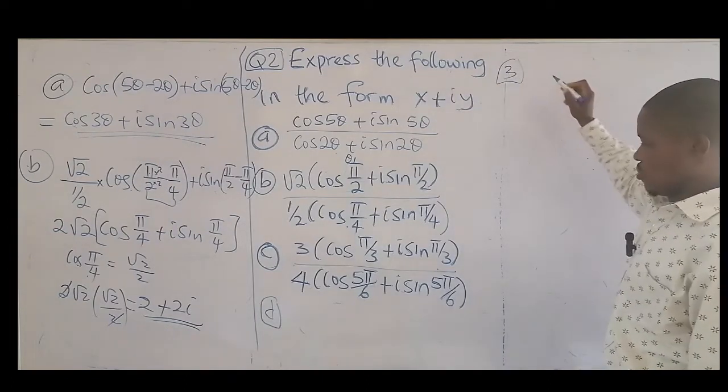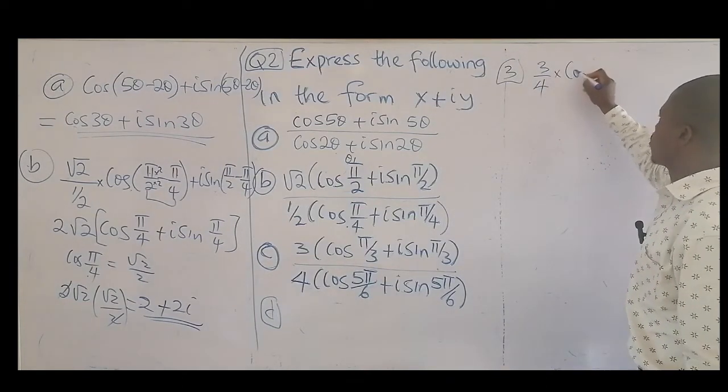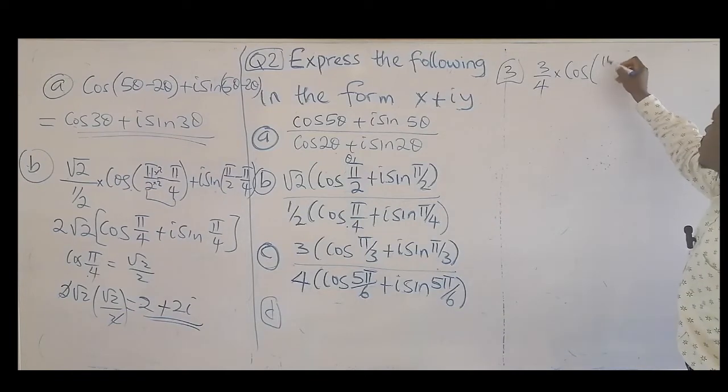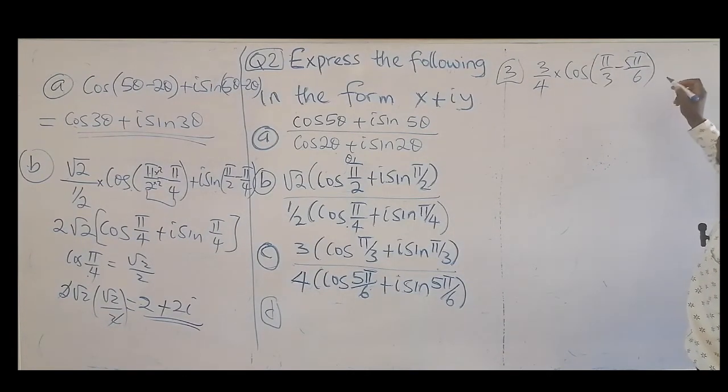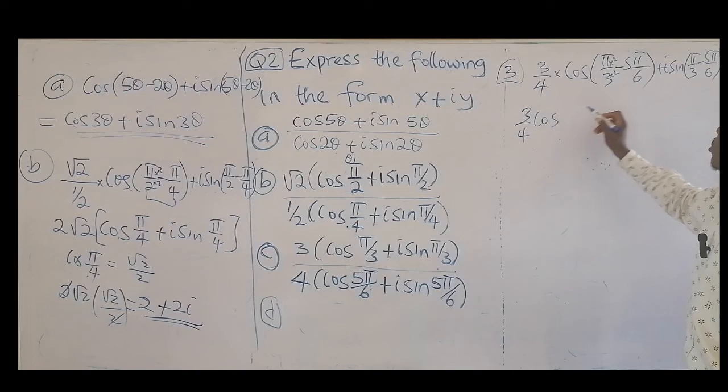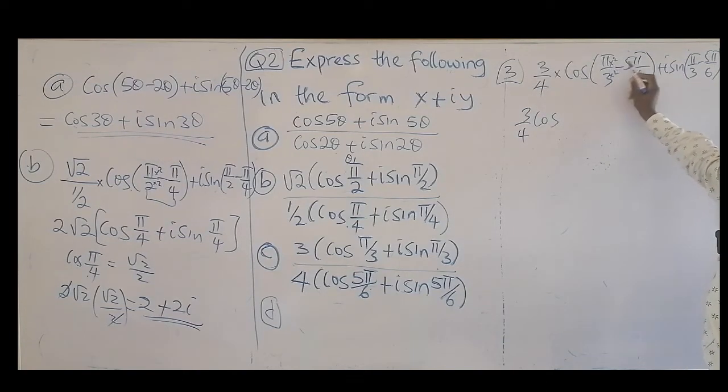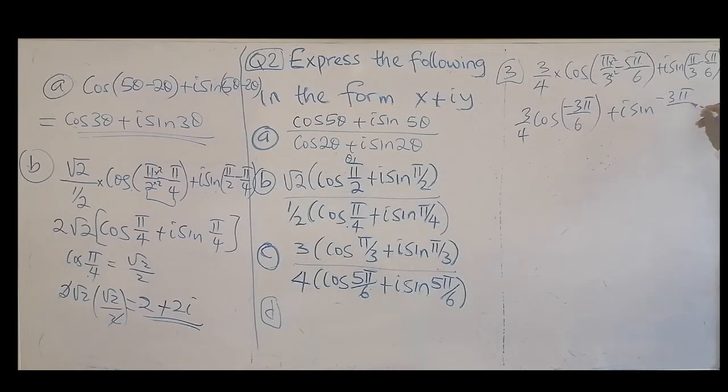Then third one, that would be 3 over 4. Then times cos, then plus theta 1 is pi over 3. Here's my theta 1. Pi over 3 minus pi over 6, then plus i sine pi over 3 minus pi over 6. So this one times 2, this one times 2. So we have 3 over 4 cos, then plus i sine pi over 6.